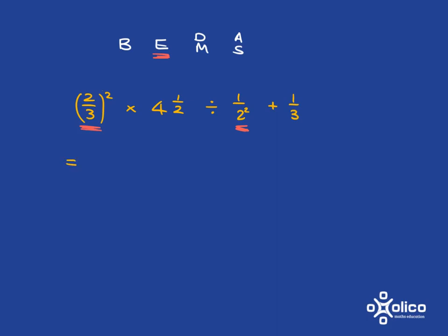2 over 3 squared is going to be 2 squared, 4 over 3 squared, 9. Then we're not dealing with that yet. We deal with the other exponent, 2 squared is just 2 times 2, which is 4. And now we've dealt with our exponents.